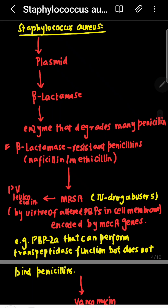An important property is that the plasmid contains beta-lactamase, an enzyme that degrades many penicillins. In response, beta-lactamase-resistant penicillins have been developed, for example nafcillin and methicillin.